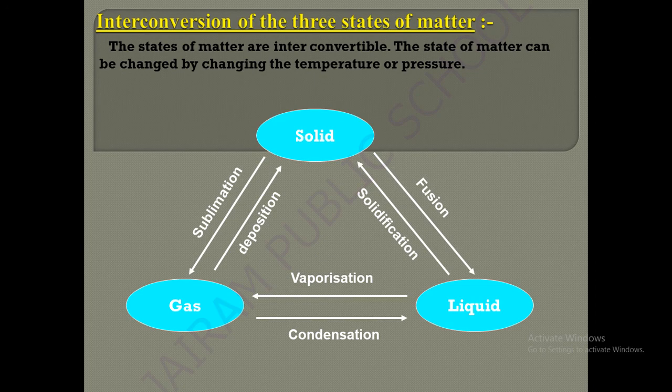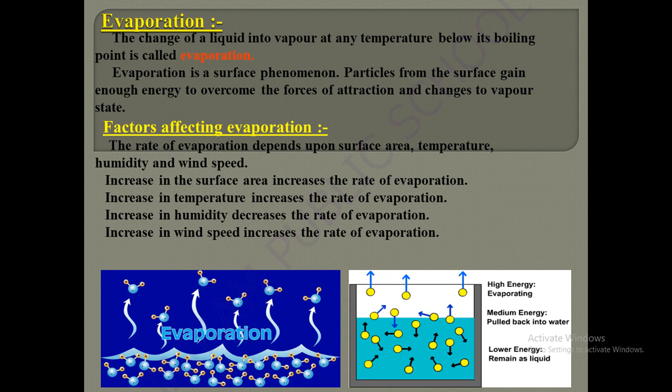The next topic is evaporation — a very interesting topic. Simply, if you keep some water out, it absorbs heat from sunlight and starts to evaporate. The change of liquid into vapors at any temperature below its boiling point is called evaporation. Evaporation happens only at the surface, so it is called a surface phenomenon — particles from the surface gain energy to overcome the force of attraction and change to vapor state.